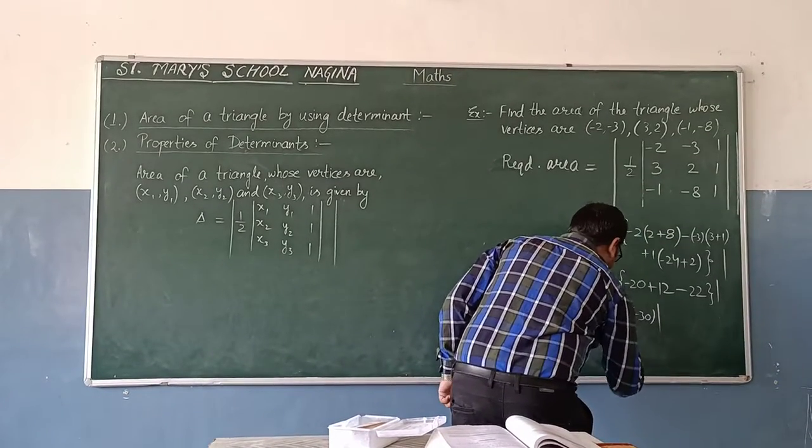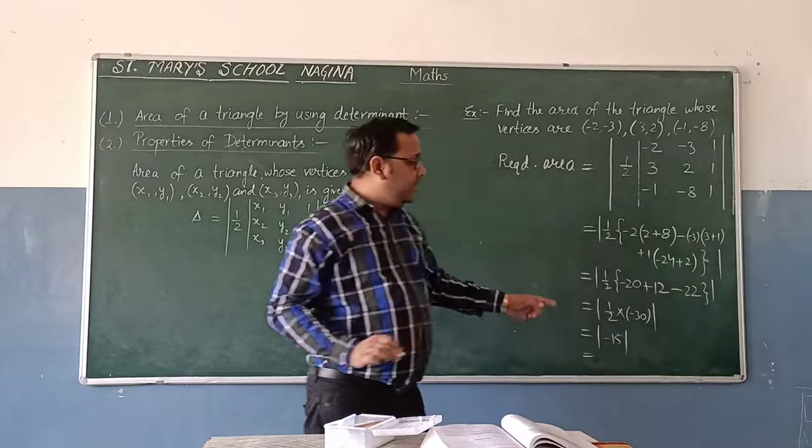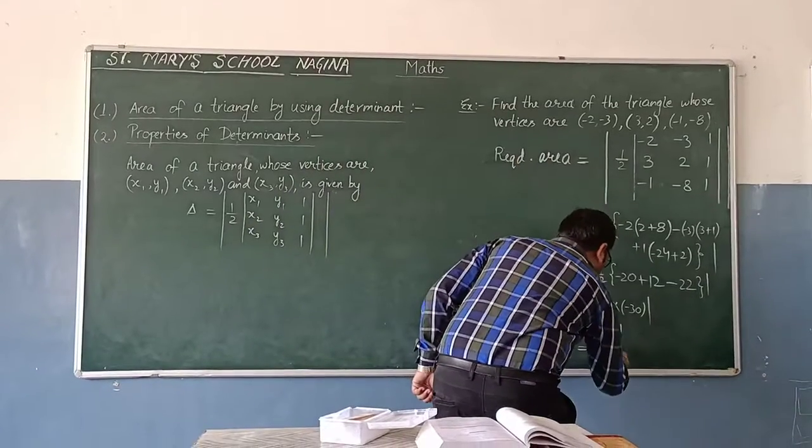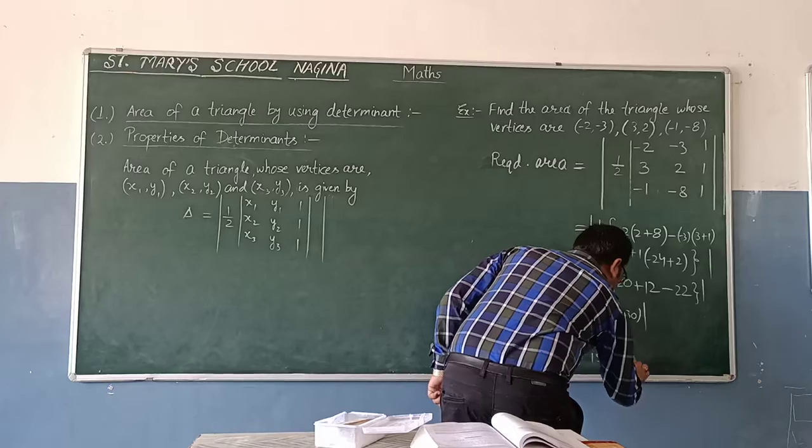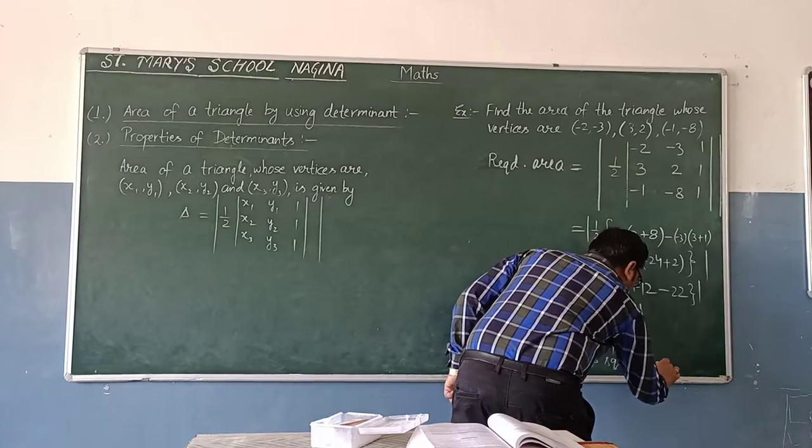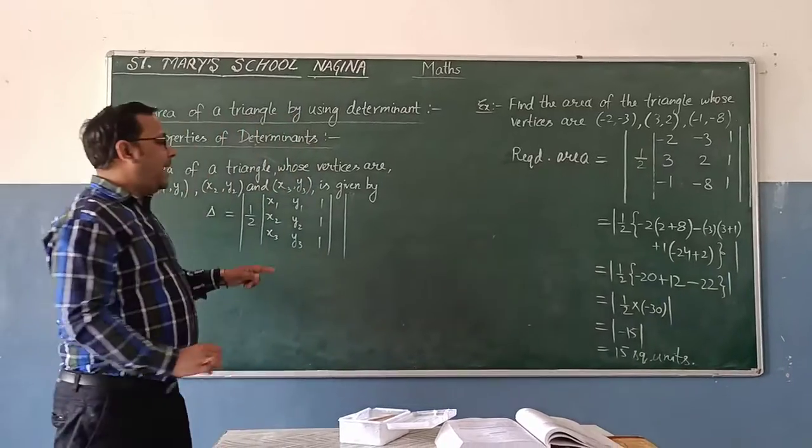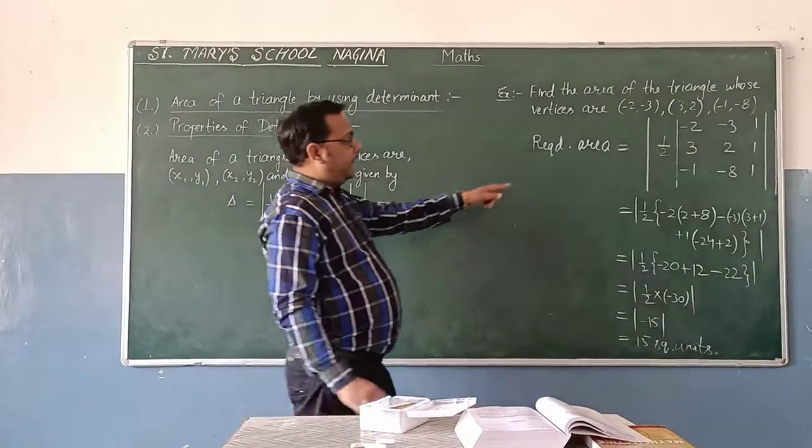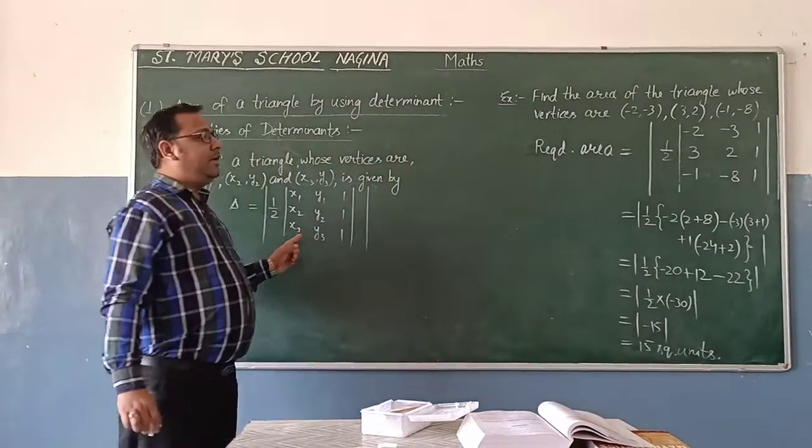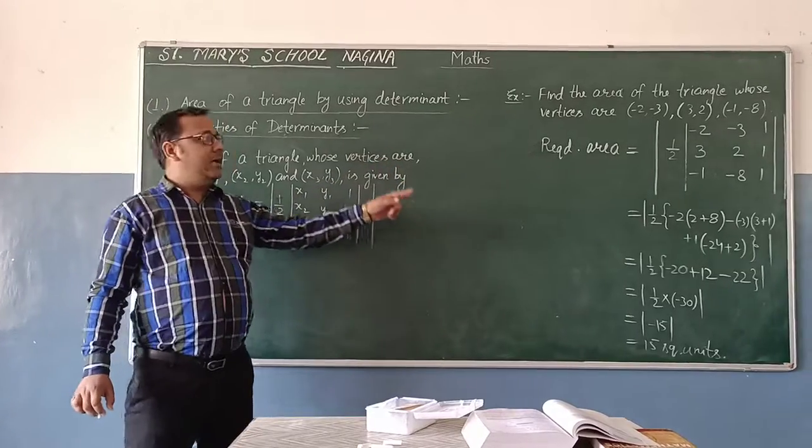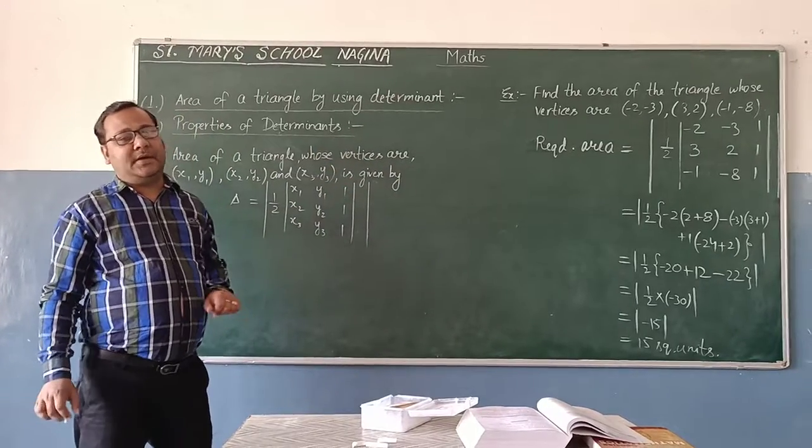It will get minus 42 plus 12, minus 42 plus 12, minus 32. So in mod it is coming minus 32. Now value of mod minus 32 is 32. You know value, 32 square meters.